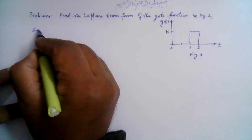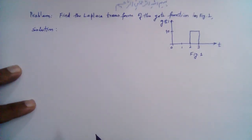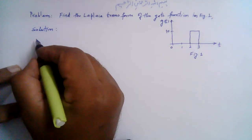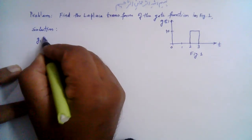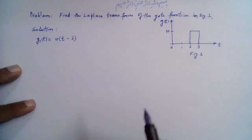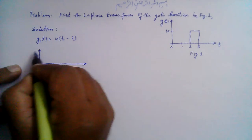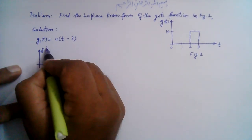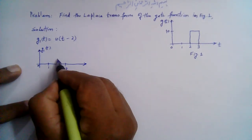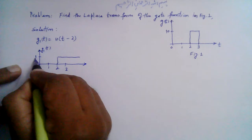For example, a unit step function which begins at 2 is represented by — let's call this g1(t) — which is u(t-2). This will be a function where, on the time axis with points 0, 1, 2, and 3, u(t-2) begins at t=2 and continues, with an amplitude of 1.